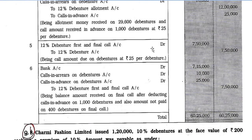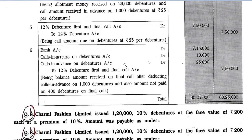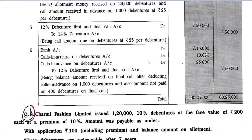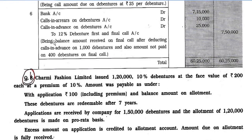Entry 5: 12% Debenture First and Final Call account debit Rs. 7,50,000 to 12% Debenture account Rs. 7,50,000 — being call amount due on 30,000 debentures at Rs. 25 per debenture. Entry 6: Bank account debit Rs. 7,15,000, Call-in-Arrears on Debenture account debit Rs. 10,000, Call-in-Advance on Debenture account debit Rs. 25,000 to 12% Debenture First and Final Call account Rs. 7,50,000 — being balance amount received on final call after deducting call-in-advance on 1,000 debentures and amount not paid on 400 debentures.